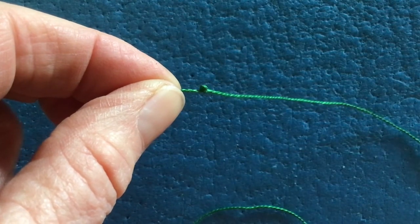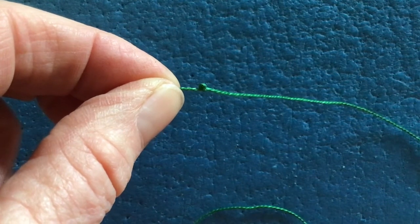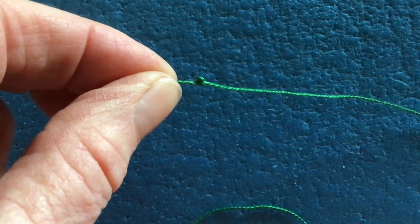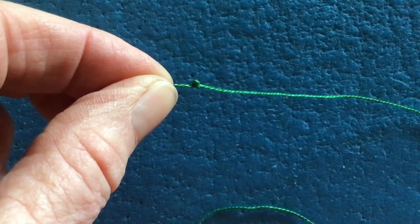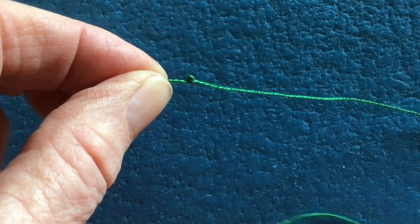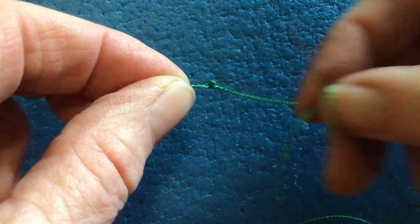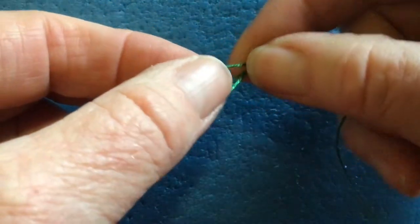Before you start stitching you want to thread your needle and tie a little knot at the end of the thread. I've been trying to make sure that the knot gets on top of itself and so I simply hold it like this.